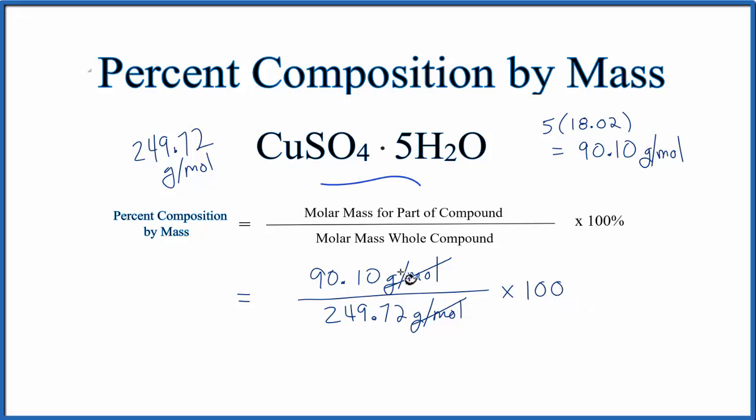When you do that, divide 90.10 by 249.72 and multiply by 100, you find the percent composition by mass of the water in the whole copper sulfate pentahydrate to be 36.08 percent.